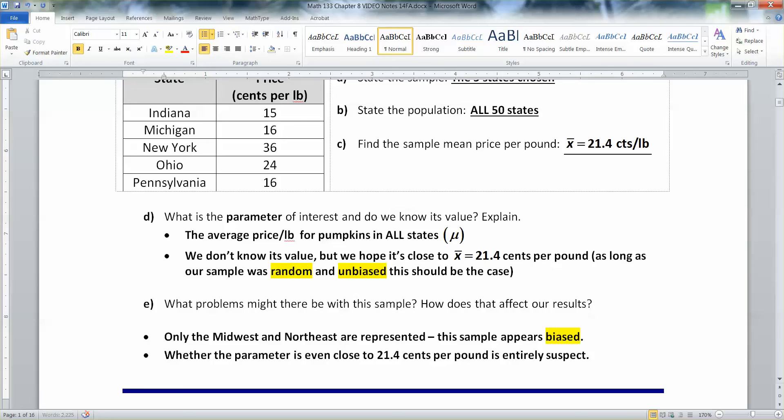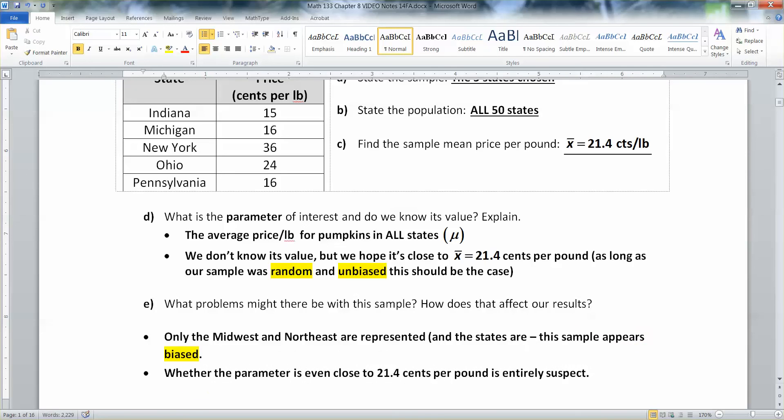The sample appears to be biased because it only includes the Midwest and the Northeast. And actually, states that are quite close together. And the states are relatively close together. They all touch each other in one string.